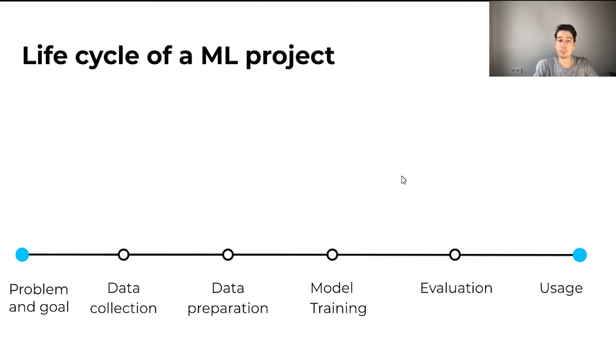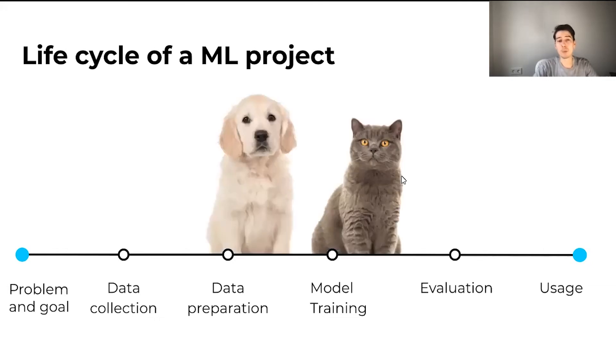It starts with defining problem and goals. Then you start collecting and preparing the data. And then you train a model, do an evaluation, and finally use your model in production. Now, let's dive deeper into each step and see what would be the role of an ML product manager. And just as an example, let's say we want to train a model that would predict if a given image is of a cat or a dog.